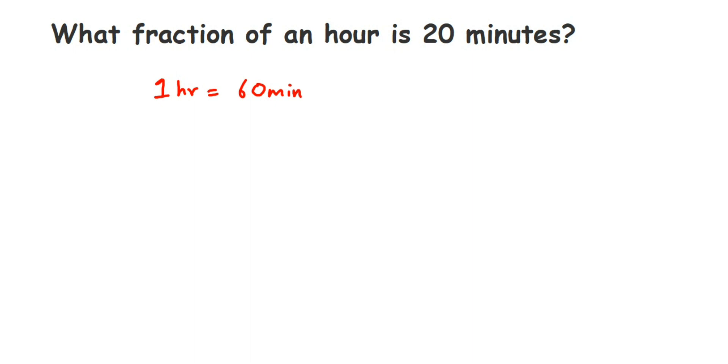Therefore, 20 minutes of an hour will be 20 divided by 60. I hope it's clear. Out of 60 minutes, how many minutes are we asking? 20. So the fraction will be 20 divided by 60, or 20 upon 60. Now we have to bring it to the reduced form.